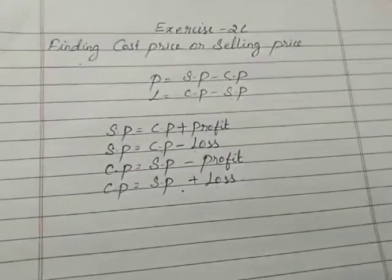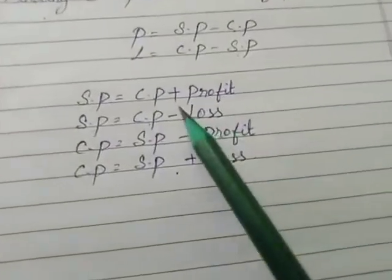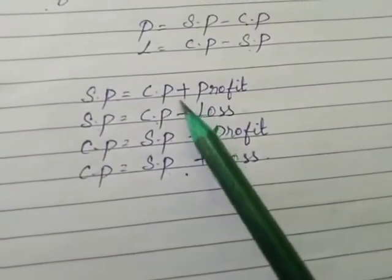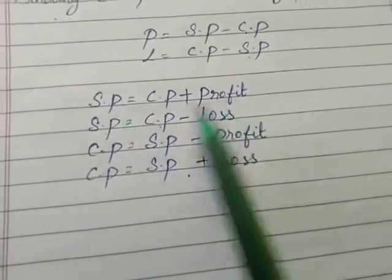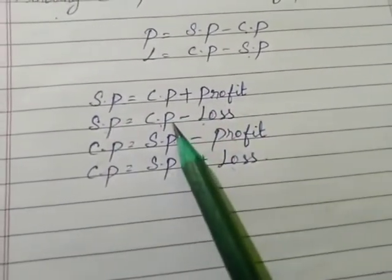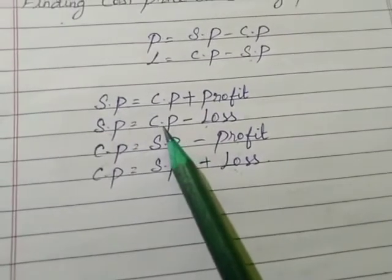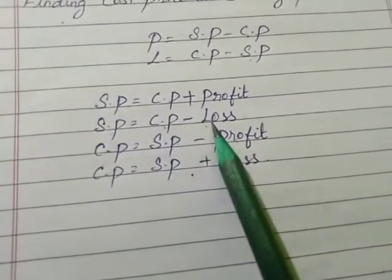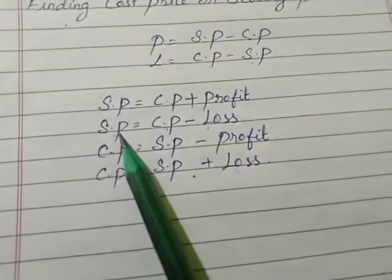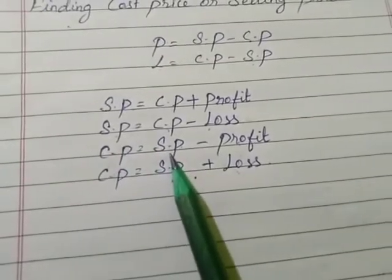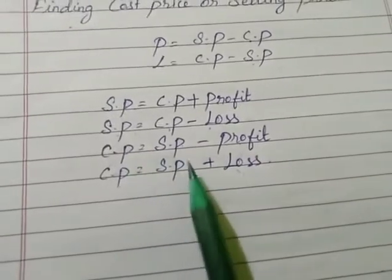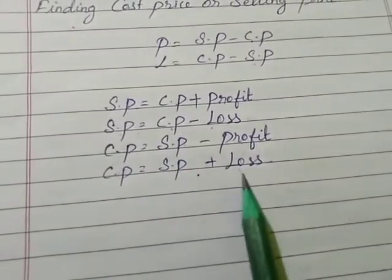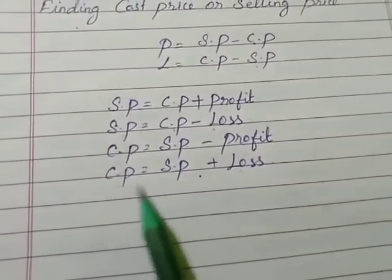Now we are going to see how to find cost price or selling price. Suppose in the example, if they give cost price with profit, you can find selling price using this formula. If they give cost price with loss, you can find selling price. If they give selling price with profit, you can find cost price. If they give selling price with loss, you can find cost price.